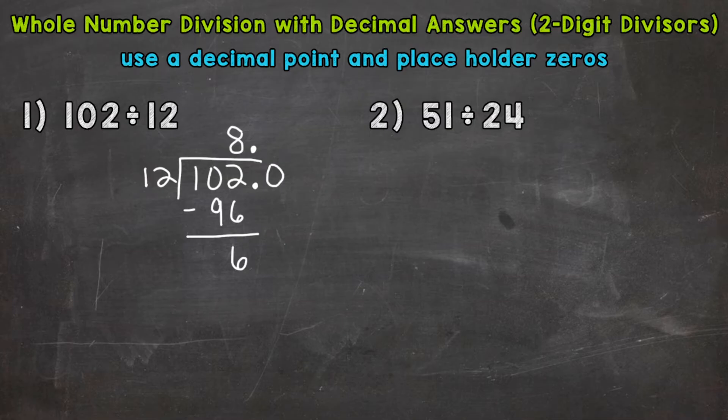Now the purpose of that zero, it gives us something to bring down and continue through our division process. Now that zero does not change the value of our problem because we added it to the right of the decimal. So that's an equivalent number there. 102 is the same value as 102.0. So let's bring that zero down and continue through our process.